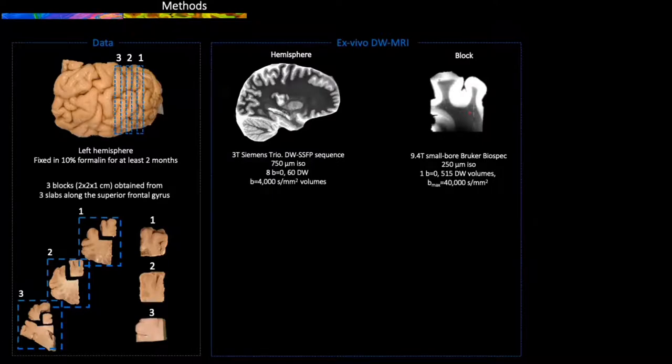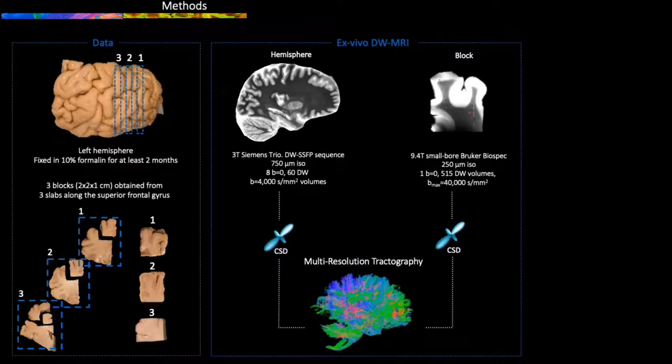The blocks were then scanned in a small bore at 250 microns. Diffusion profiles were then obtained using constrained spherical deconvolution, and the orientation information from both datasets was combined in a multi-resolution tractography process.